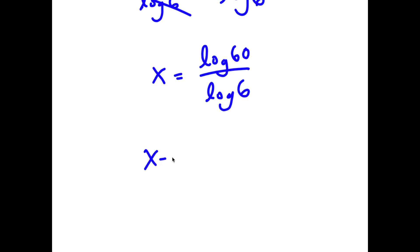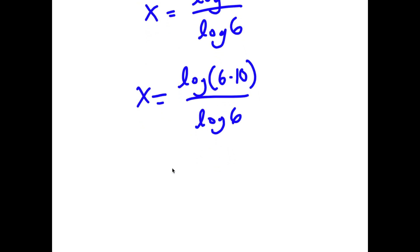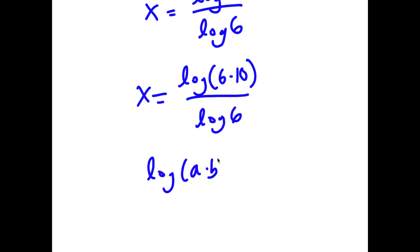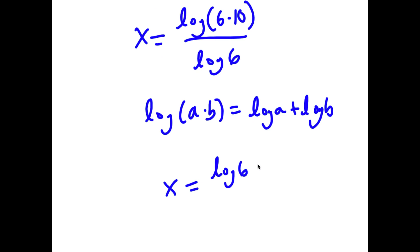Now, log 60 I can rewrite as log of 6 times 10, over log 6. And if I have something in the form log of a times b, this is equal to log a plus log b. So log of 6 times 10 is going to equal log 6 plus log 10, over log 6.